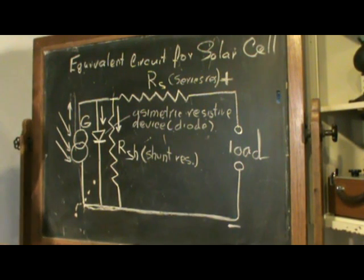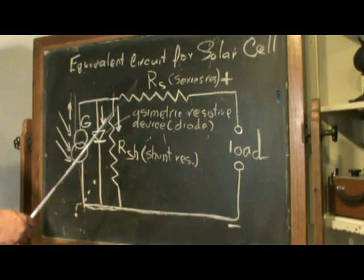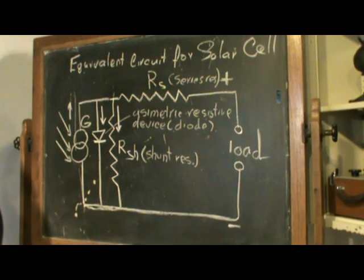What's wrong with this model is that it requires quite a bit of understanding of electricity. And not all people who would love to understand solar cells are familiar with constant current sources, shunt resistance, asymmetric resistive devices, and stuff like that.